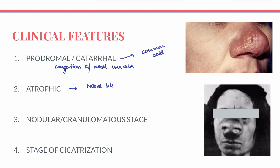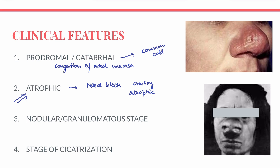The second is the atrophic stage, where the most common presentation is nasal block associated with crusting and atrophic changes in the nose. Epistaxis can also be seen. This stage can have features similar to atrophic rhinitis — which is characterized by atrophy of the turbinate bones, nasal mucosa, and arteries — making atrophic rhinitis a differential diagnosis at this stage.